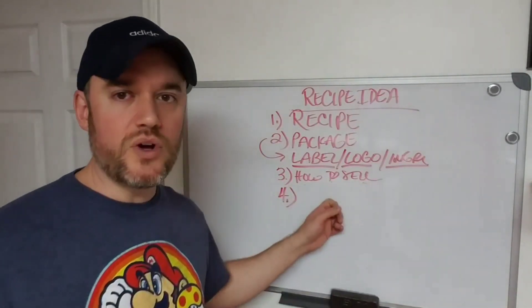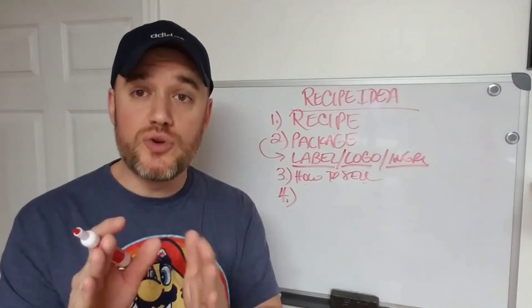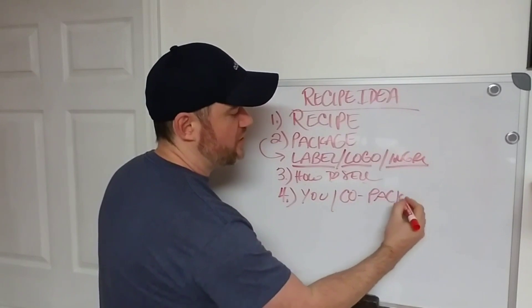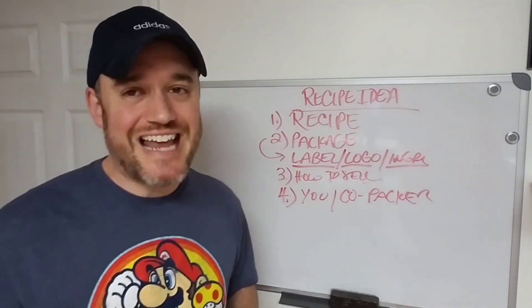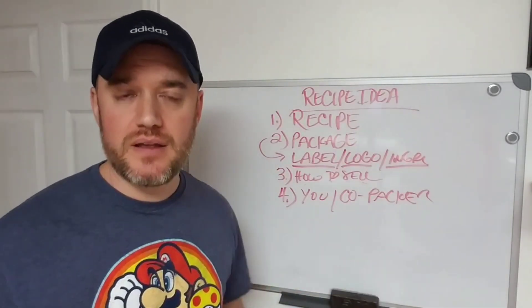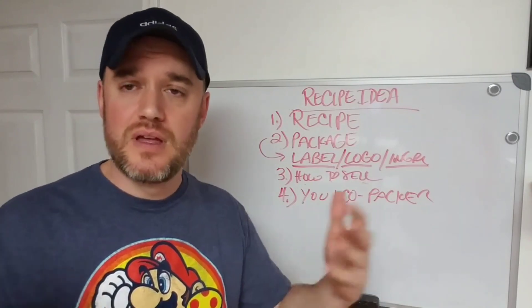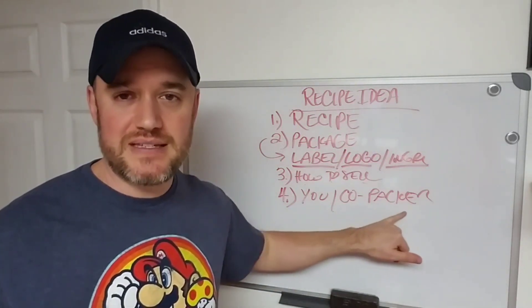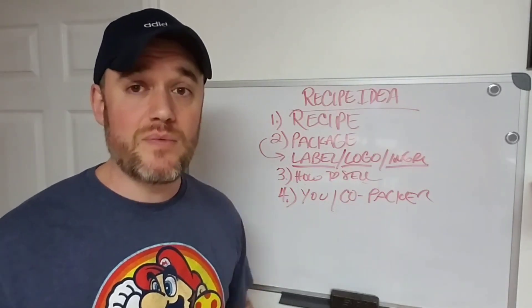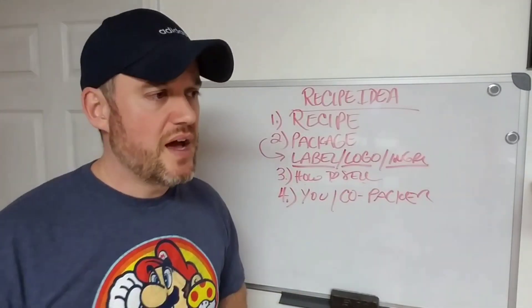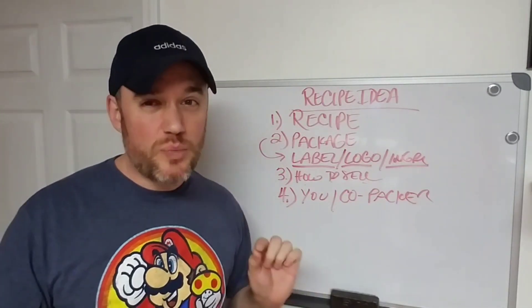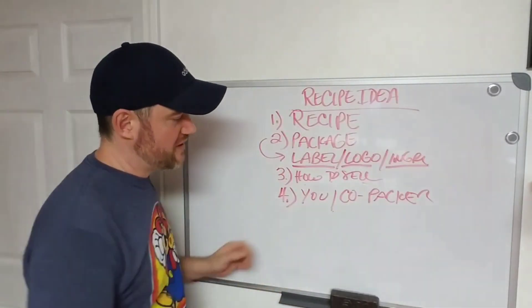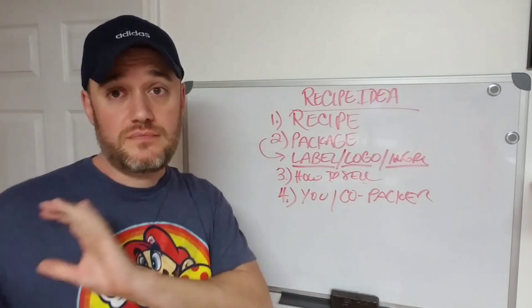Once you figure that out, how are you going to produce it? Are you going to make it or get a co-packer to make it? Initially, 99.99% of the time, it's going to be you. You're going to produce it in smaller batches. You're probably not going to mass produce 1,000 units every single day right off the bat. Down the road, a co-packer makes sense. Maybe when you're scaling and you've got 10 grocery stores, or if you're online selling 10,000 units a month, you probably don't want to be in the kitchen making that. So the fourth step would be to figure out when you're going to start yourself or use a co-packer.